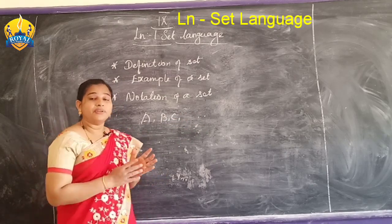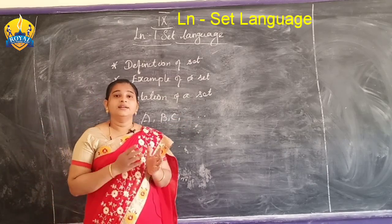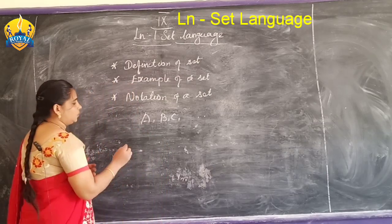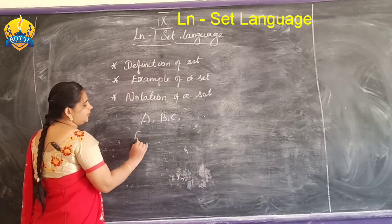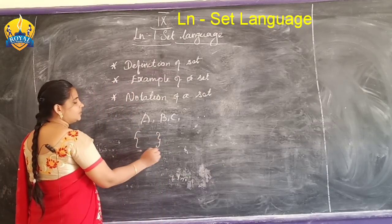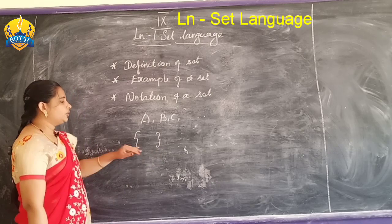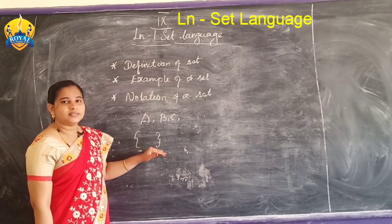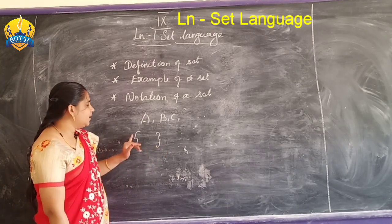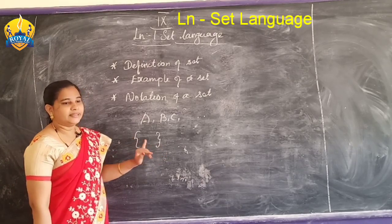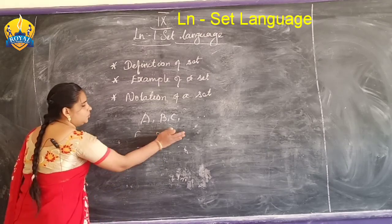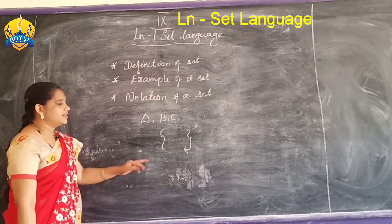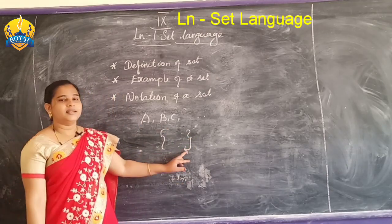Second notation rule: the elements of a set are written within curly brackets. A set is usually denoted using curly brackets — this is the symbol for a set.